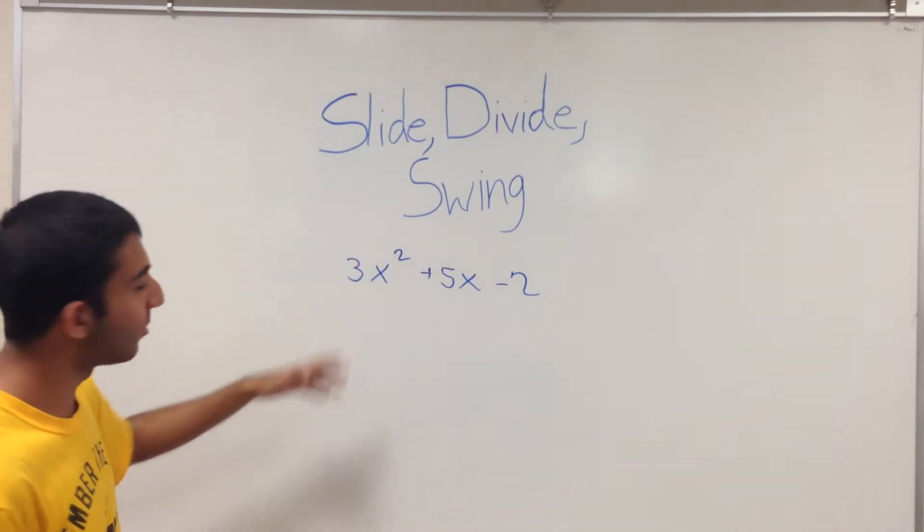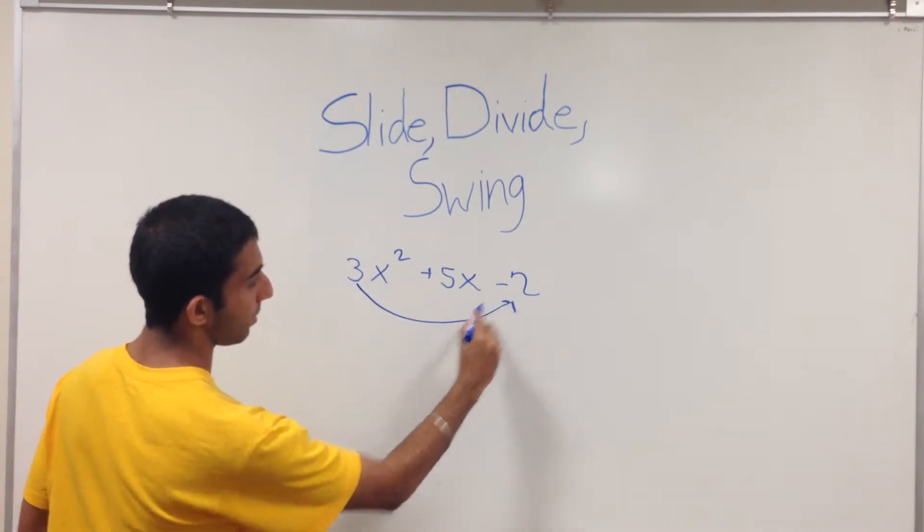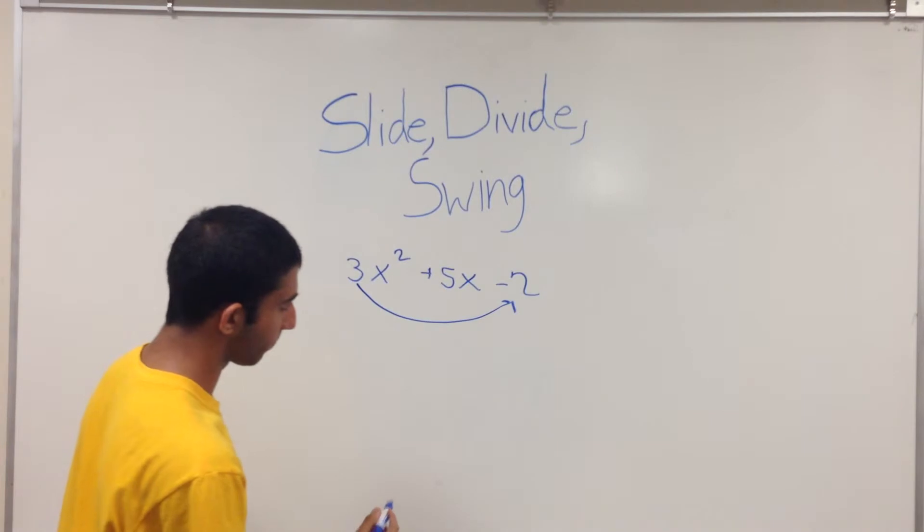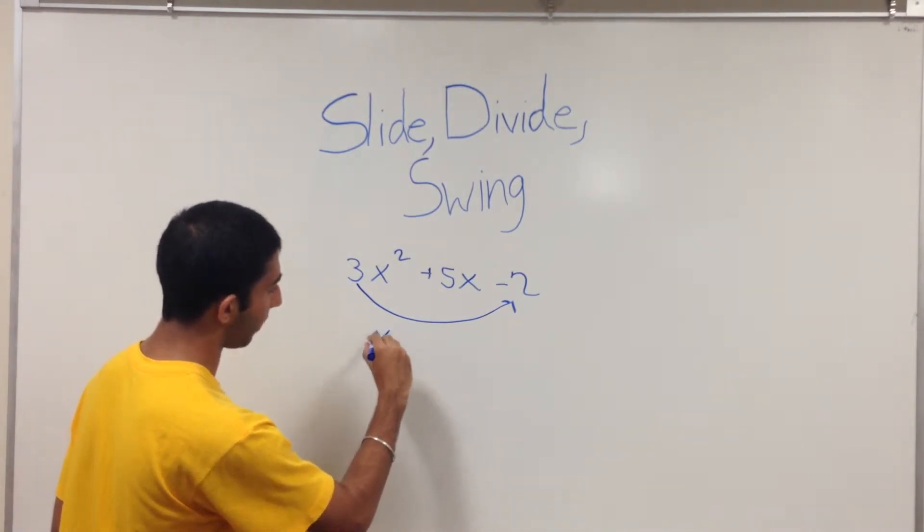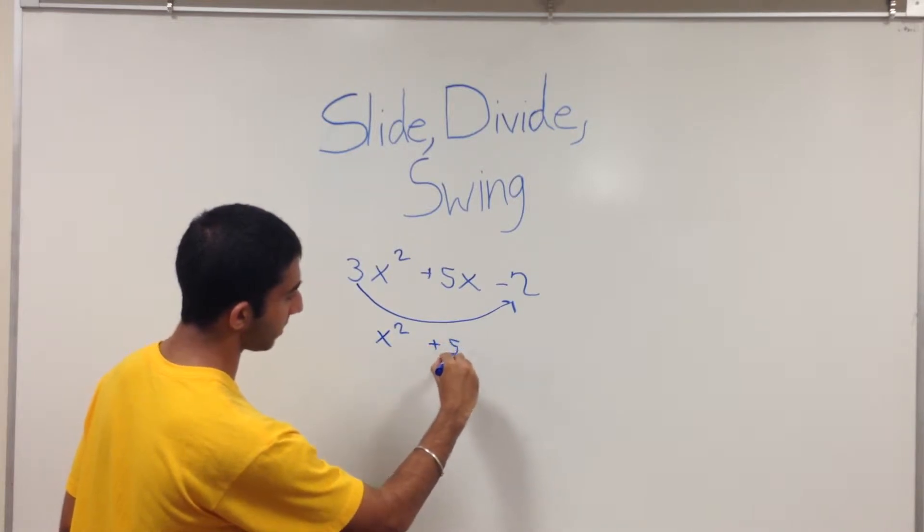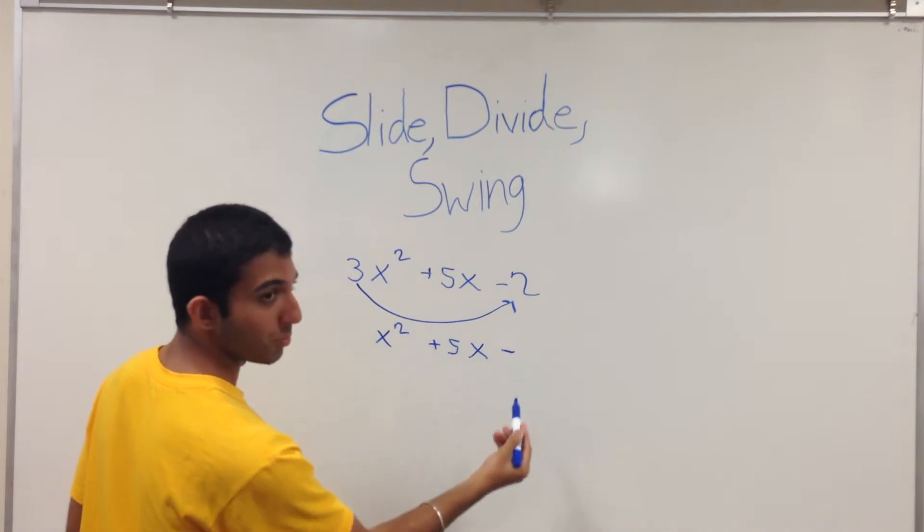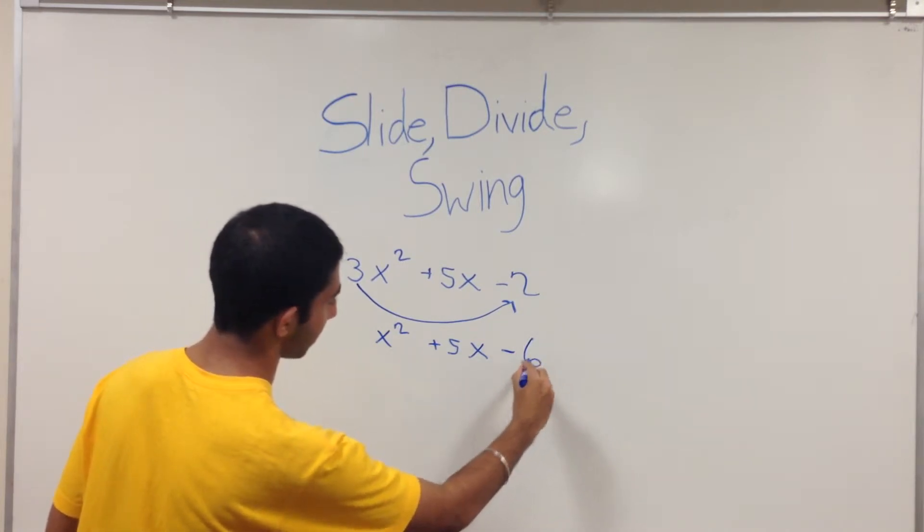What you will do now is slide the 3 and multiply it with the negative 2, which is the constant. So you will end up having x squared plus 5x minus 3 times negative 2, which is 6, negative 6.